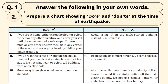If you are at home when an earthquake comes, either sit on the floor or below the bed or any other furniture and cover yourself until the shaking stops. If there is no table or any other shelter, sit in any corner of the room and cover your head by folding your hands around it. So you need to take shelter under a table or in the space under the bed, or sit in the corner of the room and cover your head.